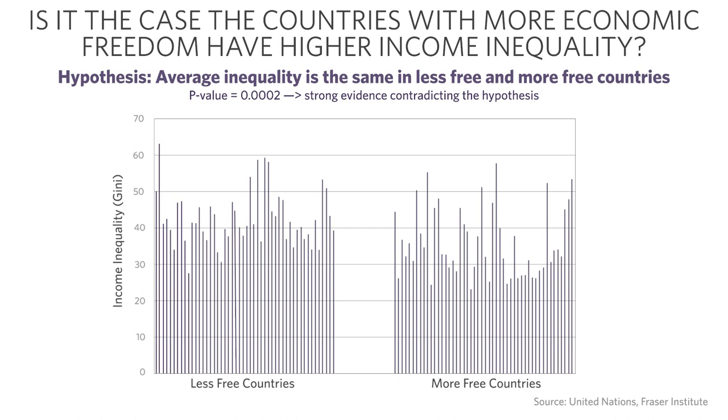I would walk away with the conclusion that there appears to be strong evidence that economic freedom is associated with less income inequality. Notice my choice of words — this is very important. Economic freedom is associated with less income inequality. The statistical test doesn't tell me anything about causation. It's not telling me that one causes the other. All I know is that when I look at more free countries, income inequality on average is less. So we use the term 'associated.'